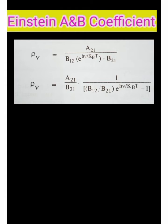By substituting the values N1 by N2 in the above equation, we can write rho nu is equal to A21 divided by B12 E power H nu by KBT minus B21.